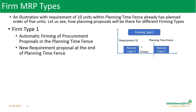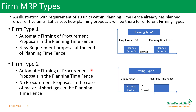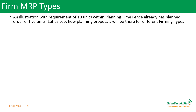Let me explain with an illustration. There is a requirement of 10 numbers within the planning time fence, with 5 numbers already generated from a previous MRP run. Now another 5 numbers need to be created. With firm type 1, automatic firming happens within the planning time fence — the existing planned order is firmed, and a new proposal for the remaining 5 numbers is generated after the planning time fence. With firm type 2, firming also happens within the planning time fence, but no new proposal is generated after it.